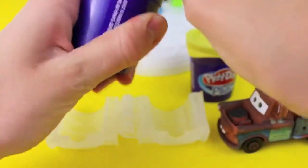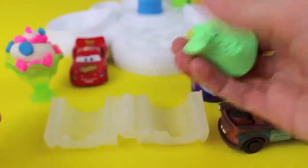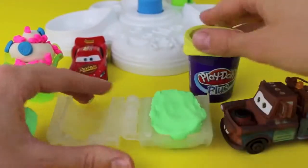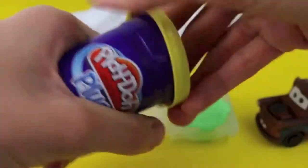Now in Cars too, Mater really wanted some pistachio ice cream. So this time I figure we'll give it to him. Here's some green Play-Doh Plus that we'll use for the pistachio ice cream. And then I'll use yellow for lemon ice cream.